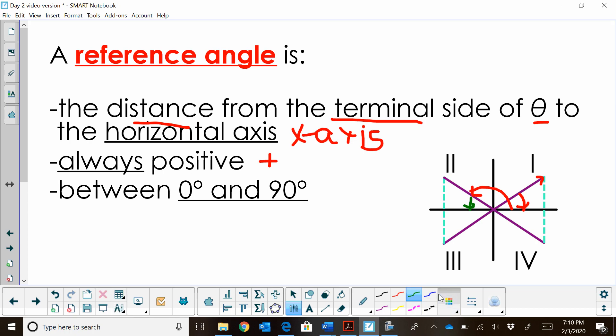In quadrant 3, if you've rotated your angle over here, you are still going to go back to the x-axis. So your reference angle will be this one in blue. And then for quadrant 4, if you've rotated all the way around to quadrant 4, your reference angle will actually be this small distance back to the x-axis. So it's always this distance back to the x-axis.